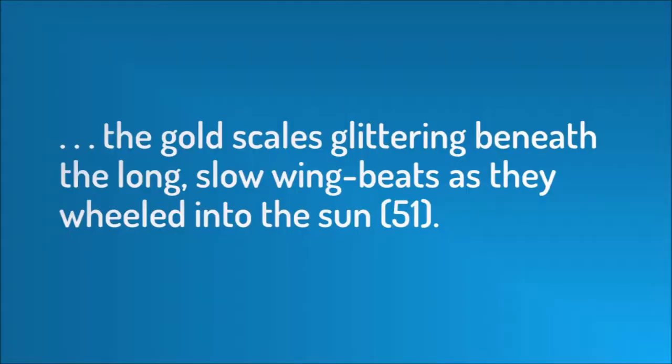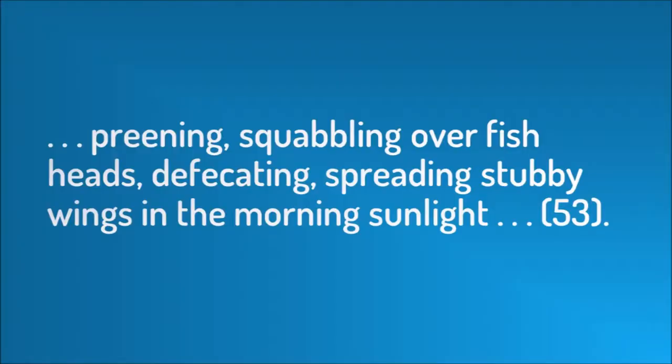Jonathan Stroud's 'Bob Choi's Last Job' is gritty and dark — he describes dragons as 'the gold scales glittering beneath the long, slow wing beats as they wheeled into the sun.' In Kage Baker's 'Are You Afflicted with Dragons,' the description goes: 'preening, squabbling over fish heads, defecating, spreading stubby wings in the morning sunlight.' In the first story, dragons are fierce, intelligent creatures. In the second, they're more like bats. However, in each of these pieces, they are clearly recognizable as dragons.